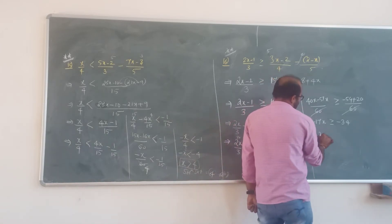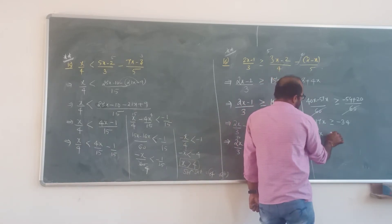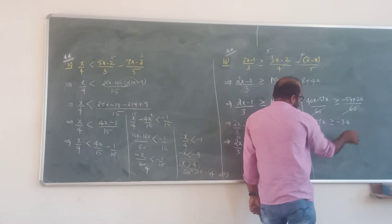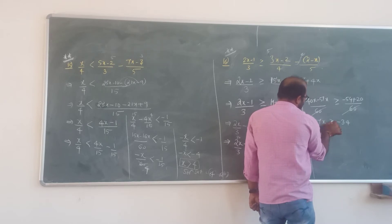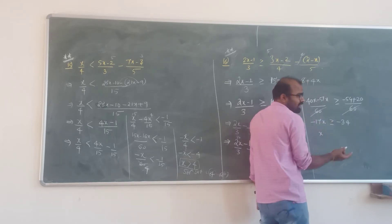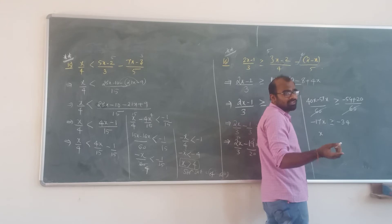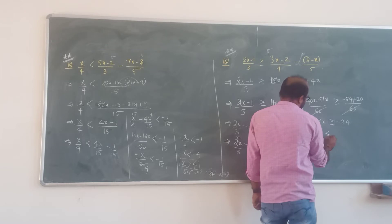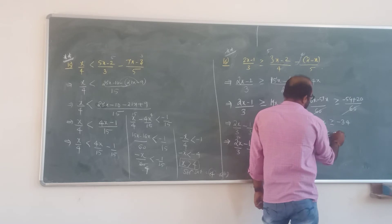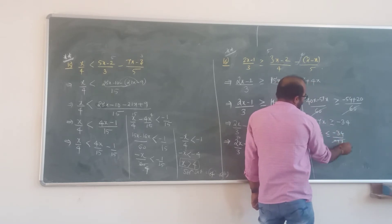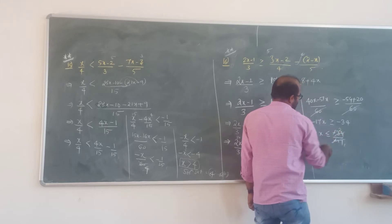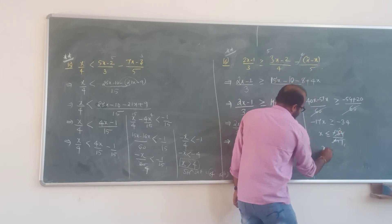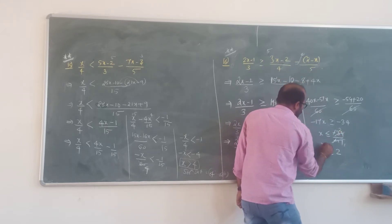Now, x is the same. Whenever a minus number gets divided or whenever a negative number is multiplied, the sign should be reversed. So minus 34 divided by minus 70 — cancel minus: x is less than or equal to 2.